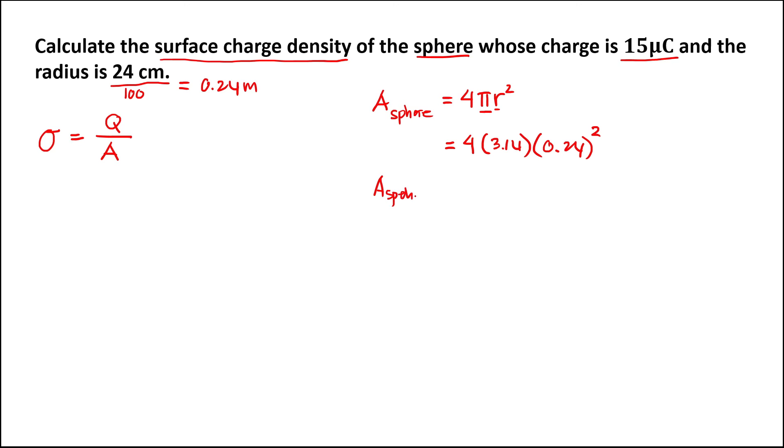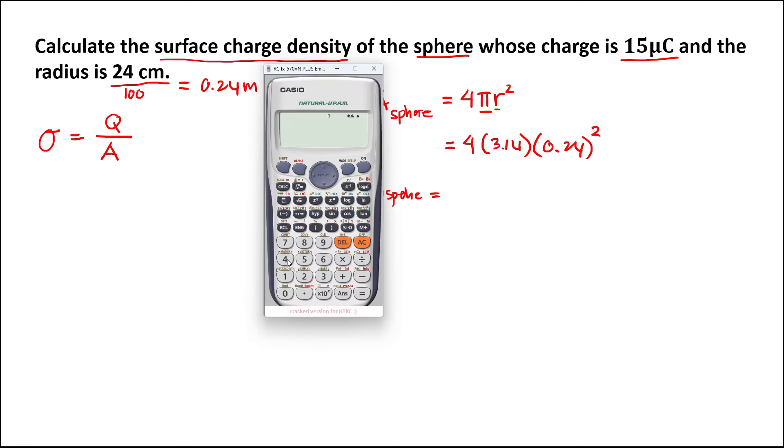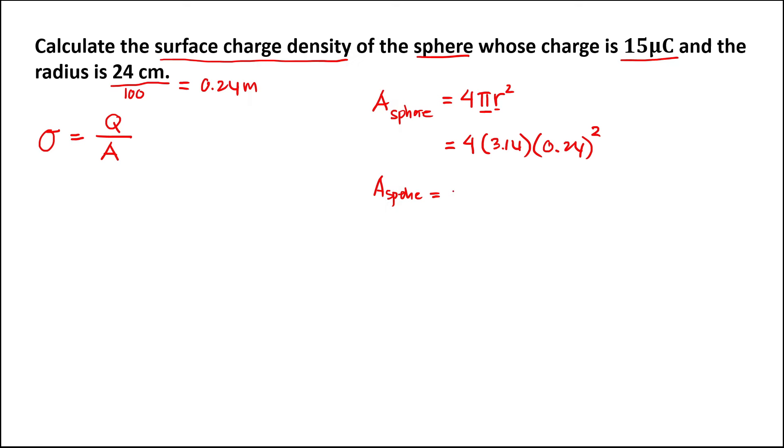Times 0.24 to the power 2. To find the area of the sphere, multiply all these numbers: 4 times 3.14 times 0.24² equals 0.7235 meters squared.